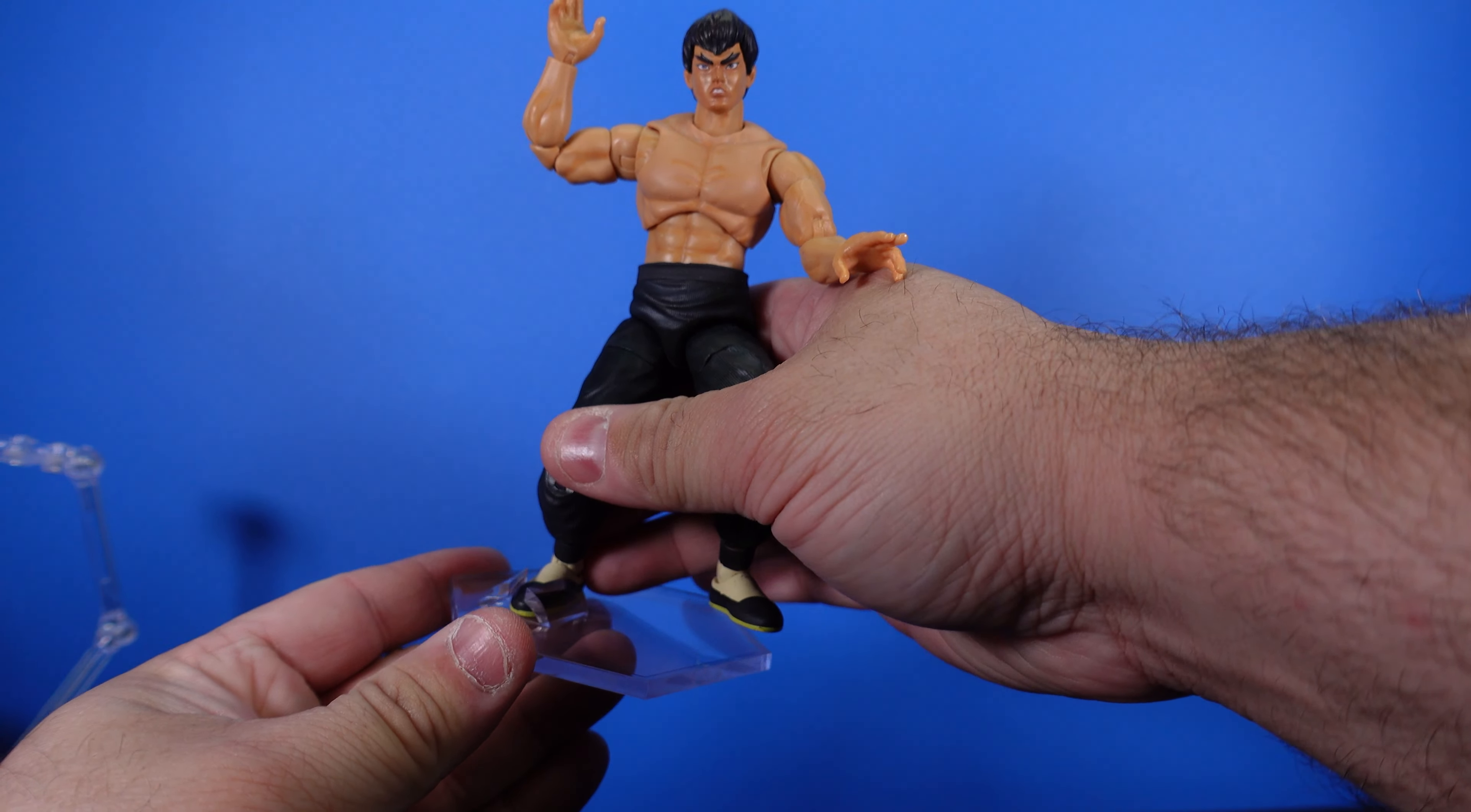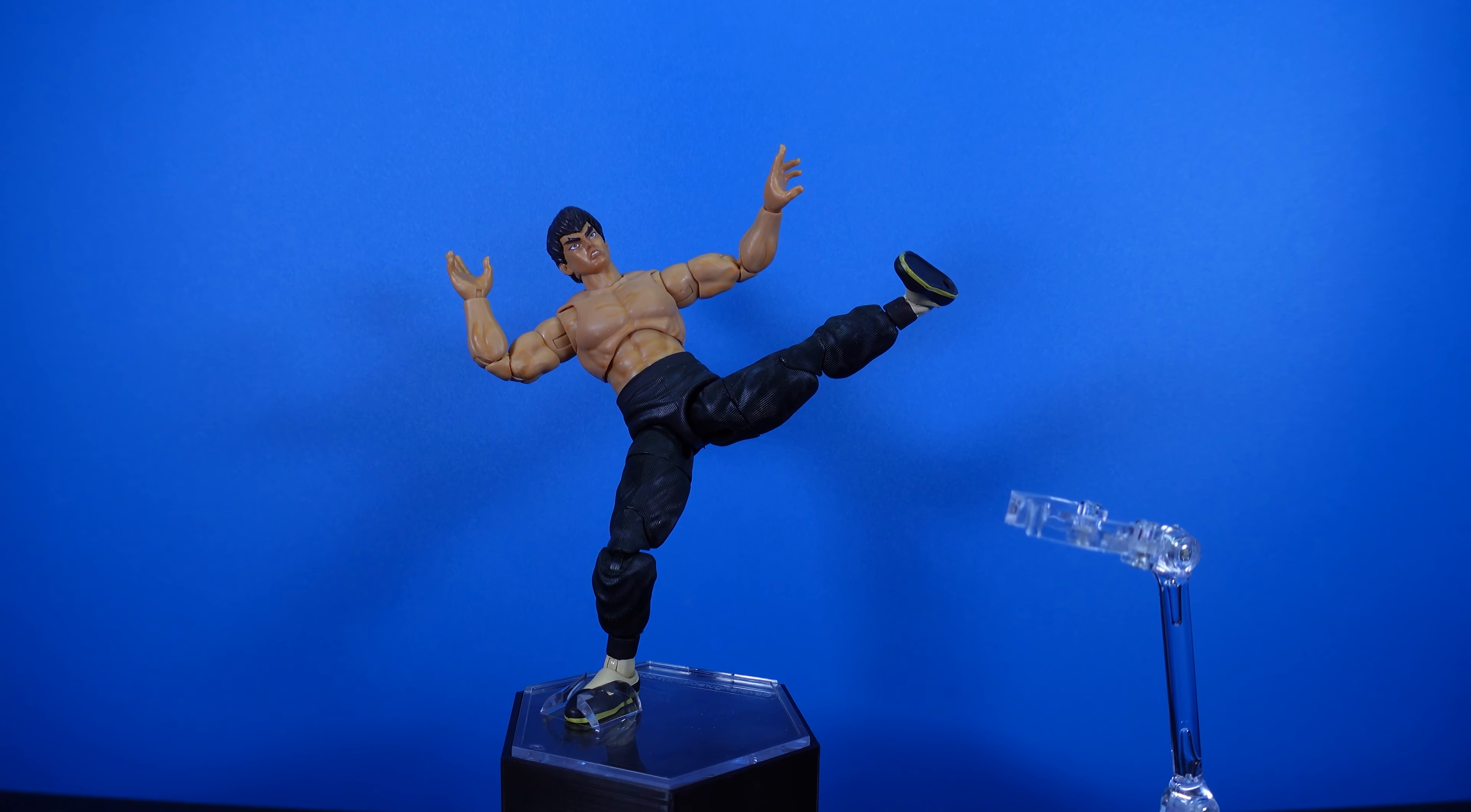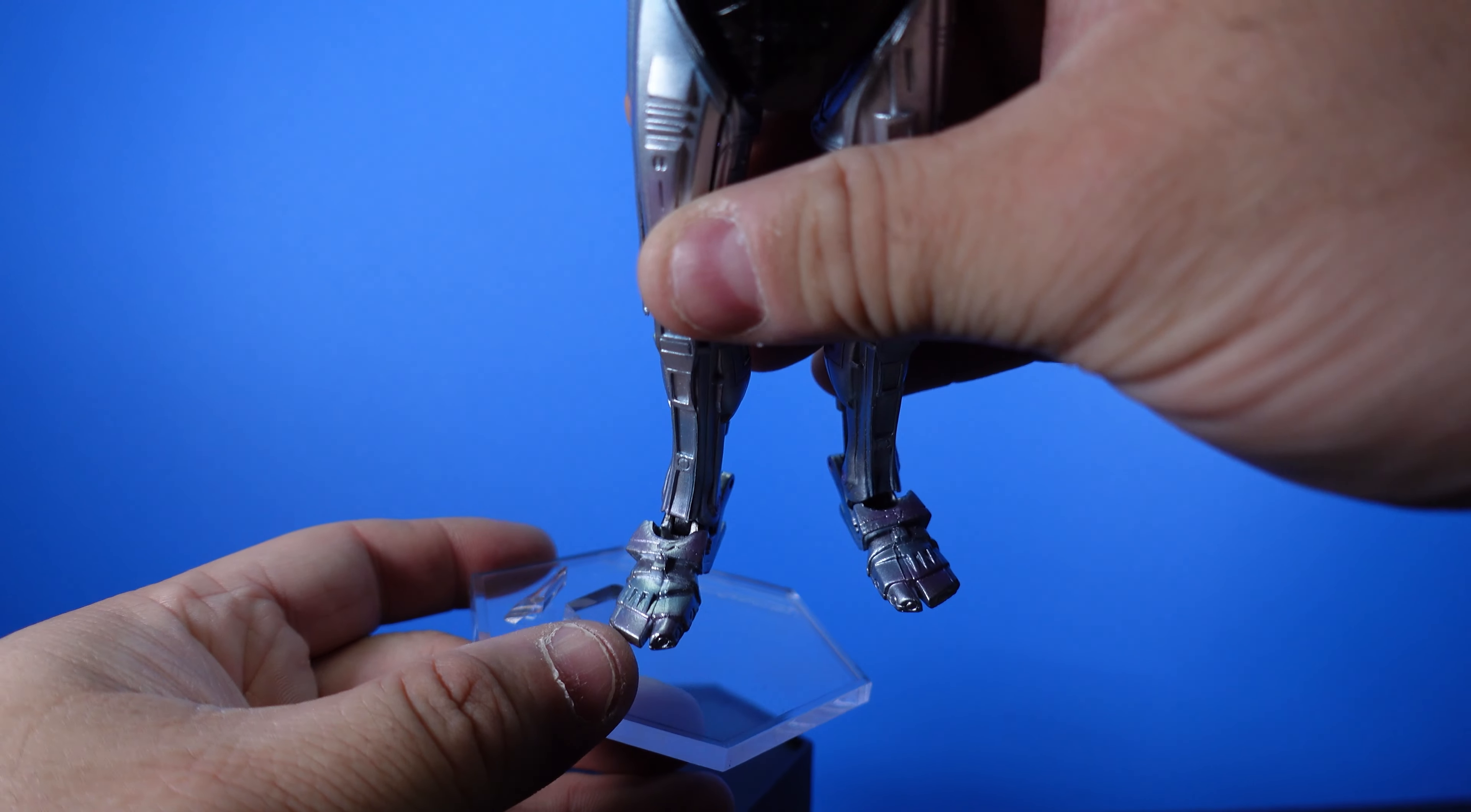I also have a Jada Toys figure right here. I have the Fei Long and it fits in and then you can go ahead and pose however you want. I'll put it right here. You guys can see, boom, it holds it. How freaking cool is that? What figure displays can you say you've had in the past that can do that? I think this is a really awesome feature. And this is a highly articulated figure, so you can get this thing in all kinds of poses.